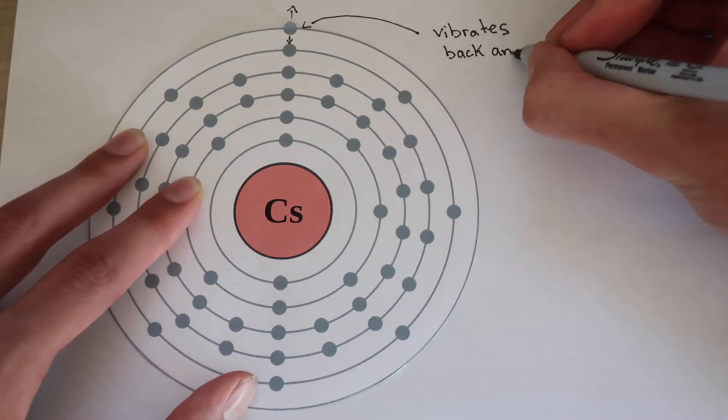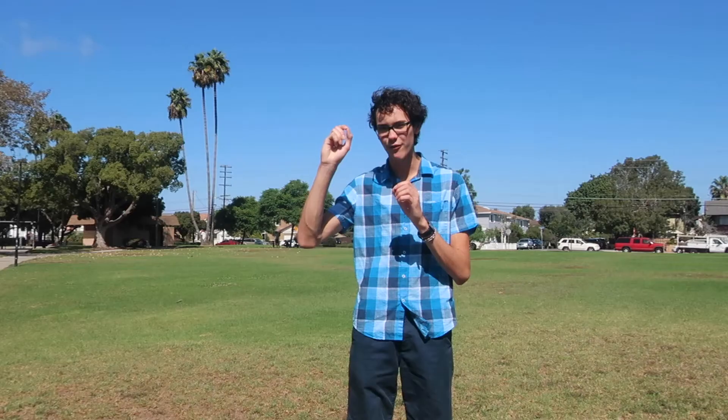What in the world does that mean? You have to understand a little bit about atoms. Atoms are comprised of a tiny nucleus in the center with electrons surrounding it, and those electrons oscillate or vibrate back and forth at very regular intervals. Scientists take a specific type of atom called cesium-133 and measure how much the outermost electron vibrates. Once that electron has vibrated exactly 9,192,631,770 times, one second has passed — by definition, exactly one second. And again, notice the length of a second didn't change, just the definition.